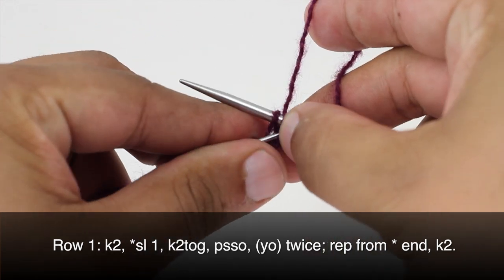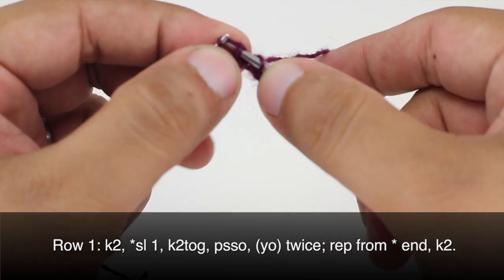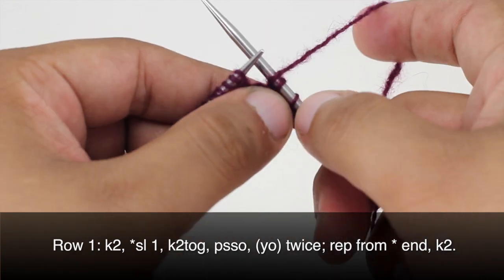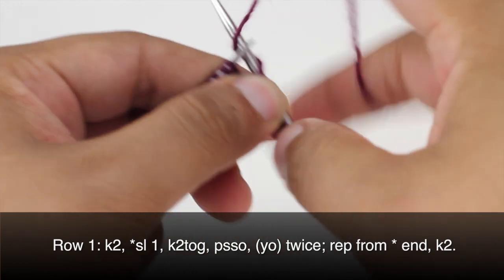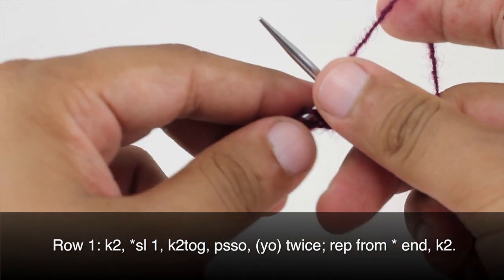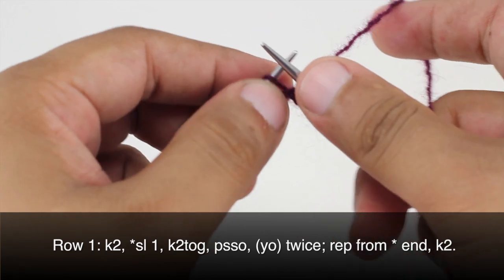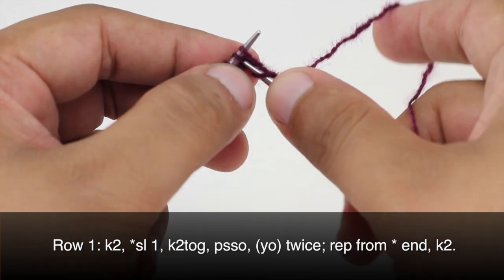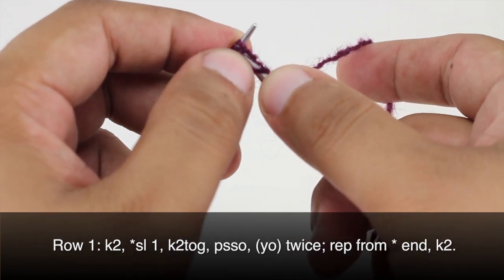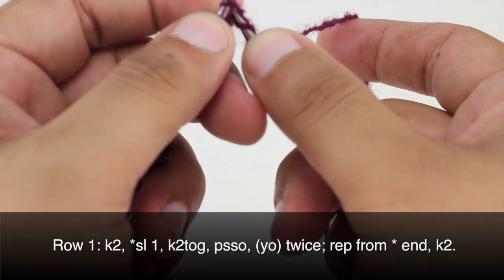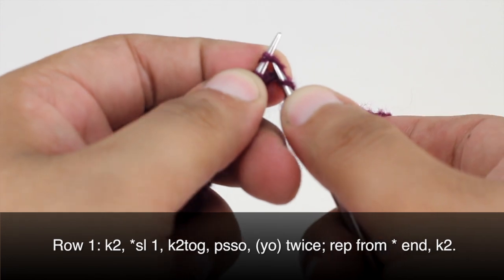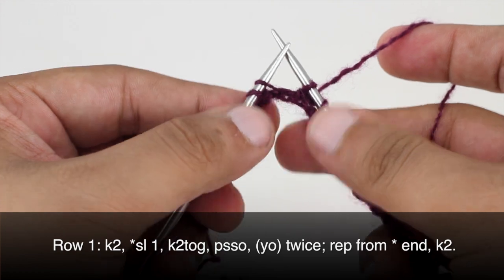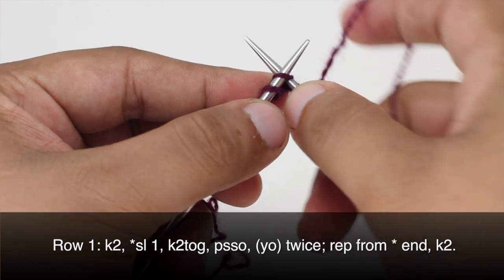Then we are going to pass the slip stitch over. Then we are going to yarn over twice: bring the yarn in front over the needle and back to front over the needle. Then we will continue repeating from the slip stitch all the way across until the last 2 stitches in our row. When we get to the last 2 stitches we are going to knit 2.